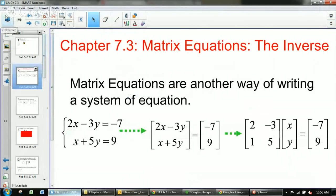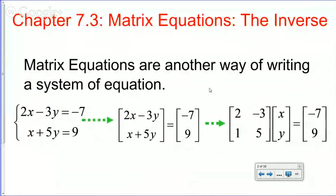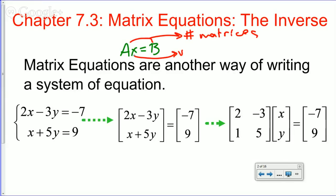Today we're going to talk about chapter 7.3, which is matrix equations and the inverse. Matrix equations are another way of writing a system of equations. Just like a normal equation, matrix equations are written in the form AX = B, where A and B are matrices and X is a variable matrix.